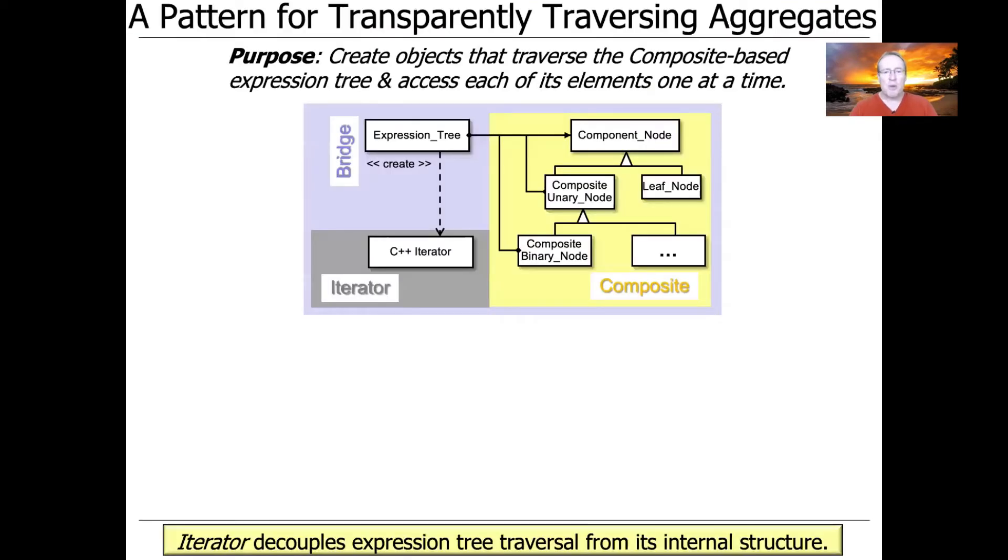The purpose of this pattern as applied in our context is to allow us to traverse the elements in aggregates, namely an expression tree, one element at a time without exposing the underlying composite-based representational details. You can think about iterator as decoupling the expression tree traversal from its internal structure.